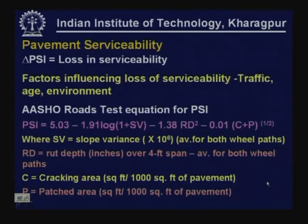Delta PSI is the loss in serviceability — the difference between the initial serviceability PI and the terminal serviceability PT permitted over the design life period. Factors influencing this loss of serviceability include repeated application of traffic loads, aging, and environmental conditions: pavement layers may become saturated, or high temperatures may lead to low strength of bituminous layers. Climatic factors and traffic parameters are the main influencing factors leading to change in serviceability.